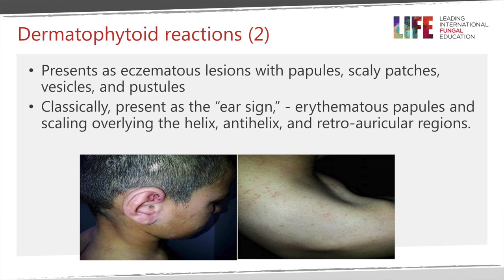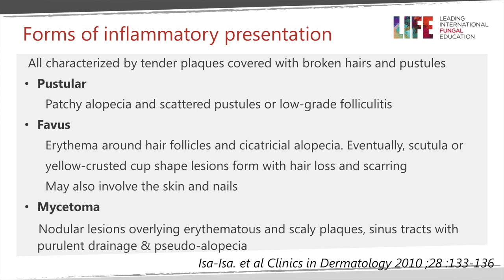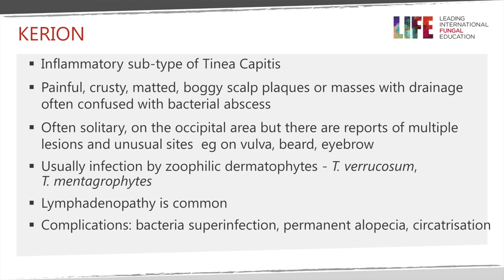Inflammatory presentations include pustular lesions — patchy alopecia with scattered pustules or low-grade folliculitis. Sometimes there is favus, where you have erythema around the hair follicle, plus scutula, which is a yellow crusted cup-shaped lesion with hair loss, matting, and oozing that crusts over and looks yellow. There can also be mycetoma — nodular lesions overlying erythematous and scaly plaques, sometimes with sinus tracts, purulent drainage, and pseudo-alopecia.